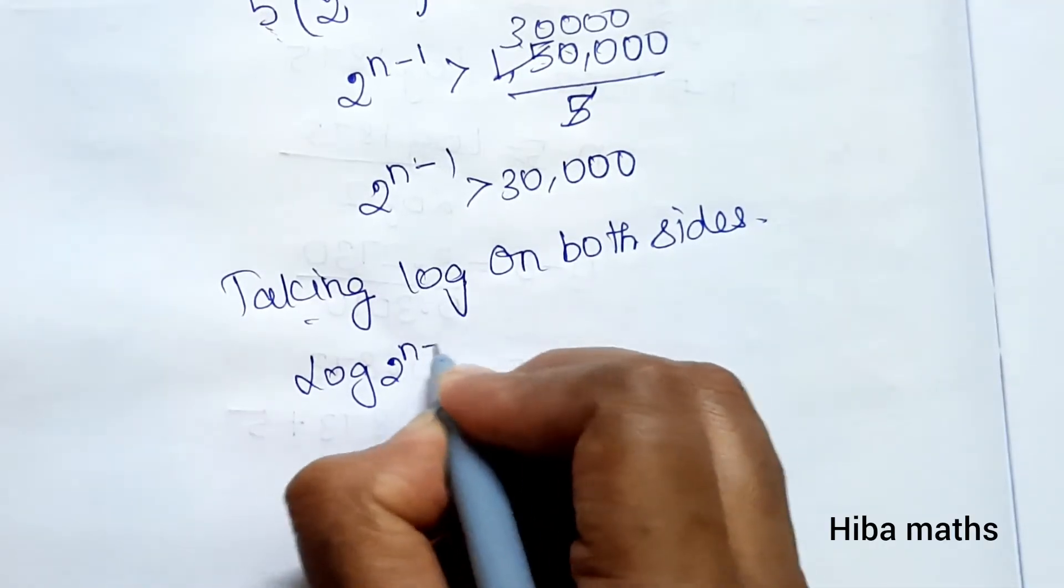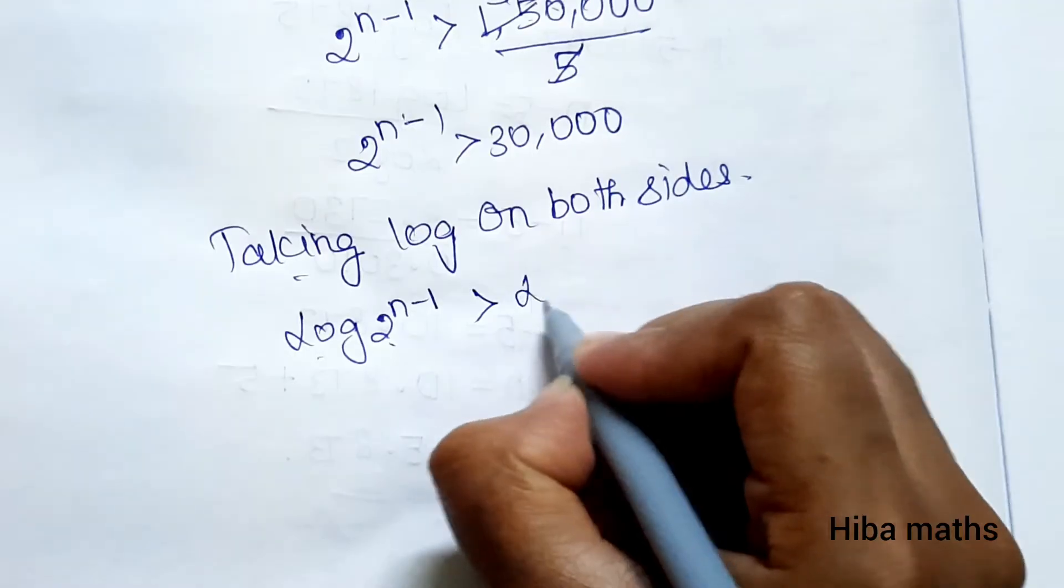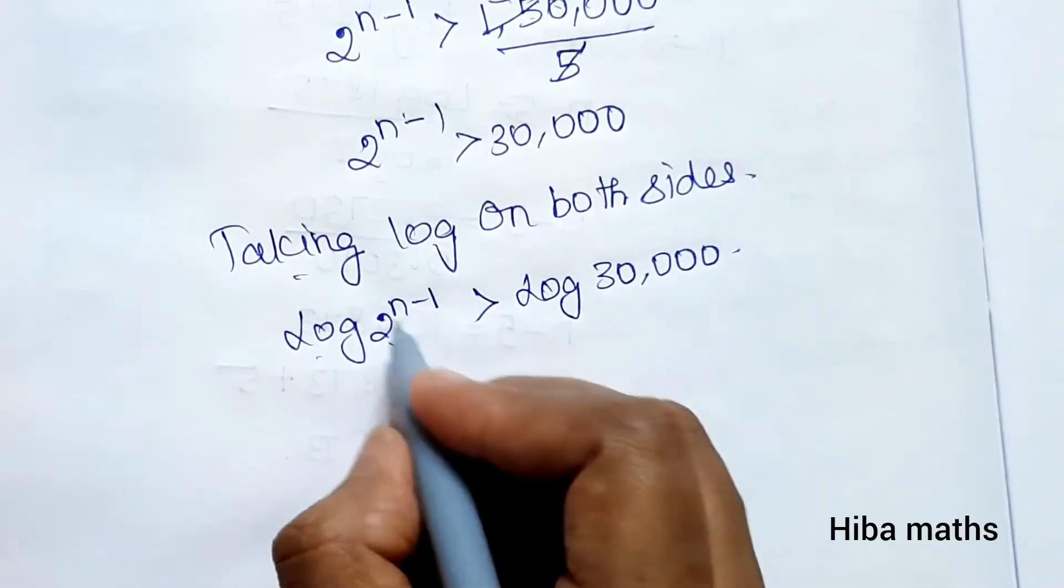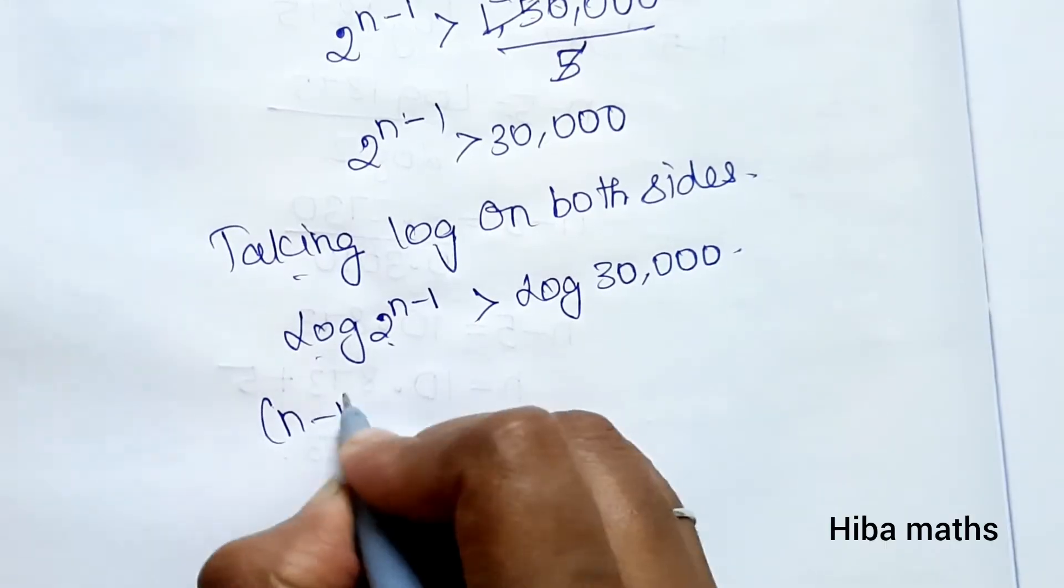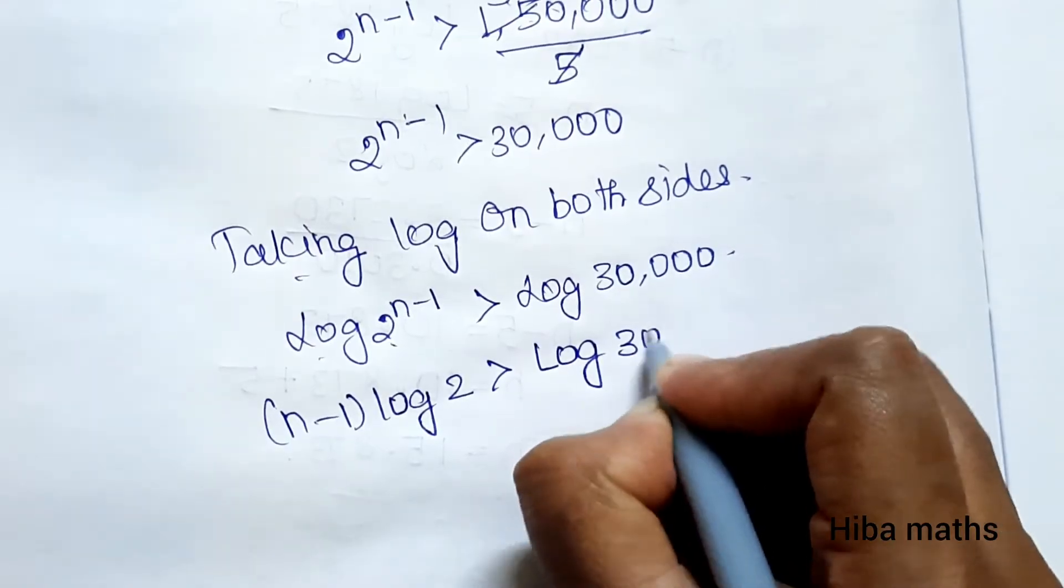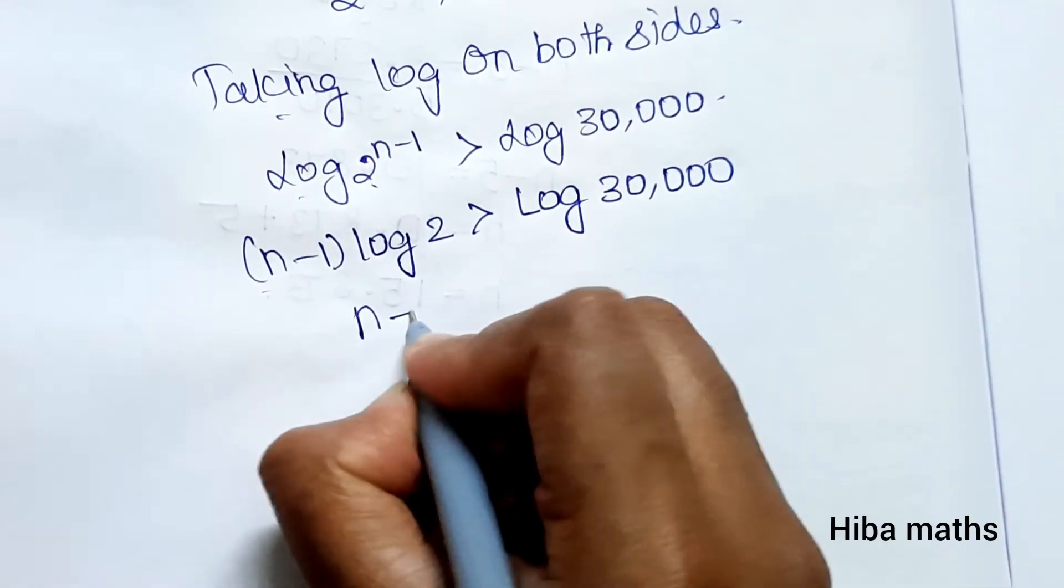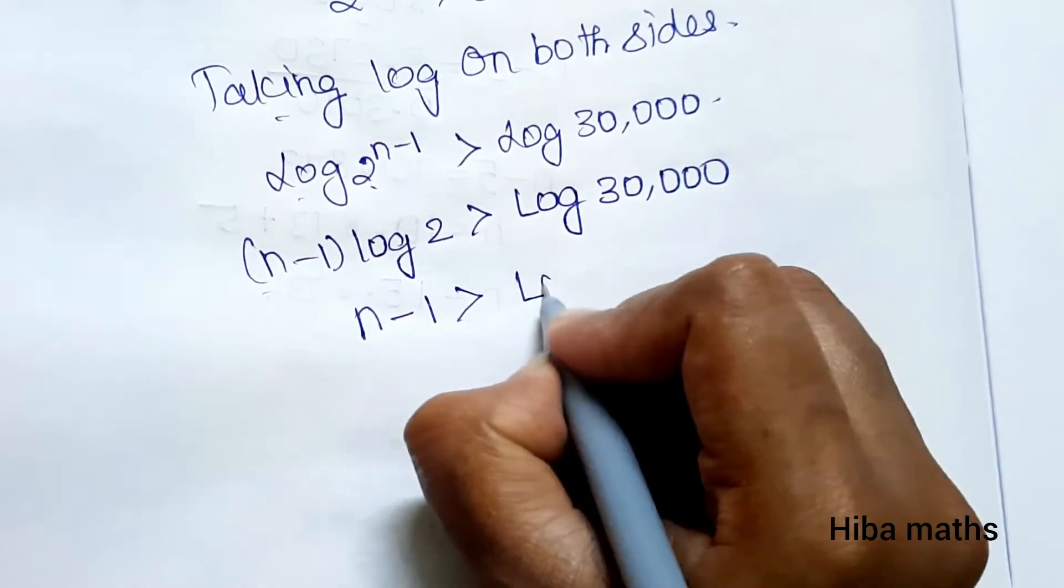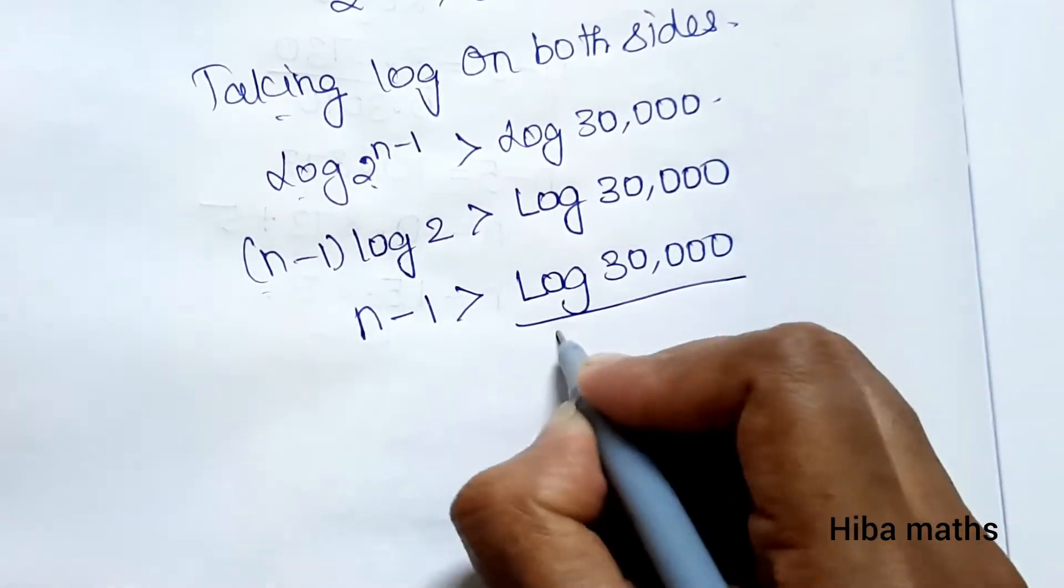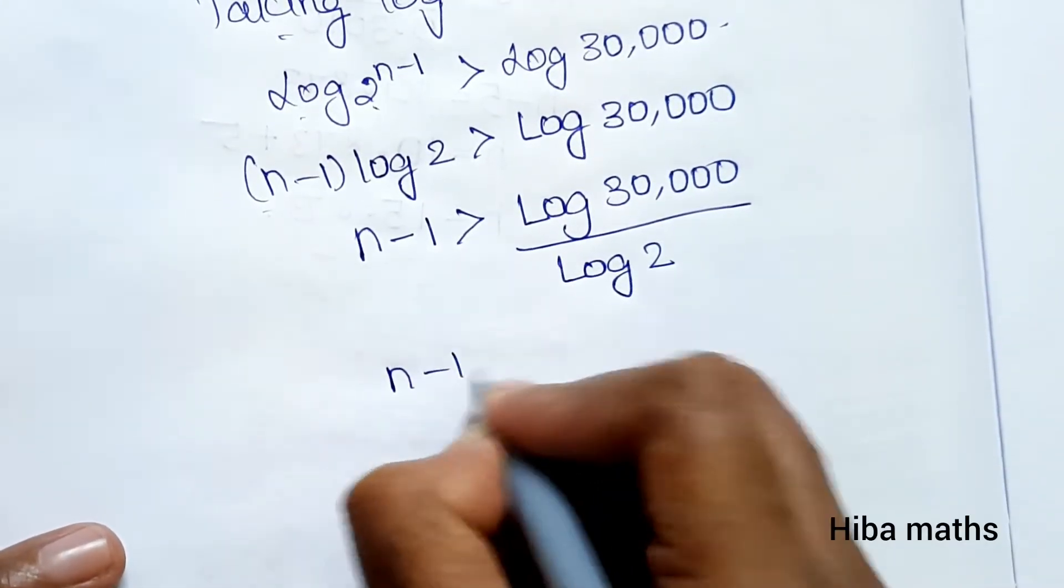Log 2 power n-1 is greater than log 30,000. Using power rule: (n-1) times log 2 is greater than log 30,000. Therefore, n-1 is greater than log 30,000 divided by log 2.